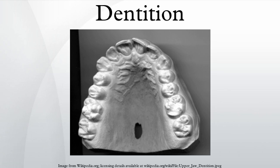Dentition is particularly useful in tracking ancient populations' movements, because there are differences in the shapes of incisors, the number of grooves on molars, presence or absence of wisdom teeth, and extra cusps on particular teeth. These differences can not only be associated with different populations across space, but also change over time, so that the study of the characteristics of teeth could indicate which population one is dealing with, and at what point in that population's history they are.